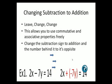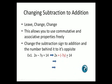Let's look at an example. We originally have 2x minus 7y is equal to 14. We changed the problem, we left the 2x alone, changed the subtraction to addition, and the 7y to negative 7y. That's leave change change.